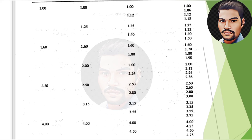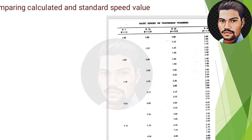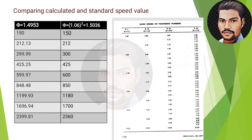After leaving the sixth interval from 1700 rpm, we get 2360 rpm as our ninth and maximum standard speed. So our selected standard speeds are: 150, 212, 300, 425, 600, 850, 1180, 1700, and 2360 rpm. Our calculated maximum was 2400 rpm.